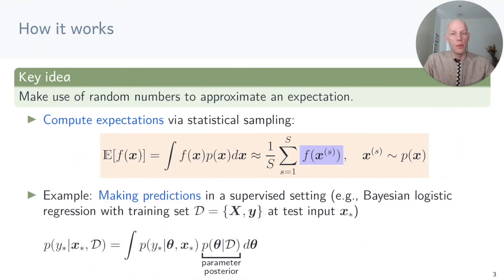For example, if we were to make predictions in a supervised learning setting, such as Bayesian logistic regression with training set d and test input x star, we get the predictive distribution of the label y star by solving this integral problem.